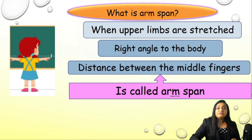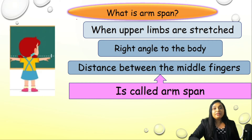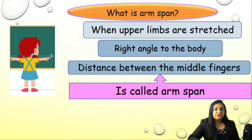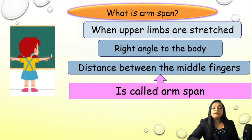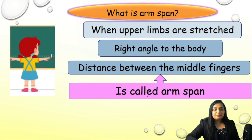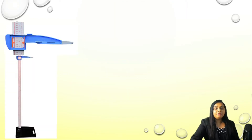The foremost question is: what is arm span? When the upper limbs are stretched — as you can see in this picture, the child is standing facing the wall or a board — the arms are stretched at right angles to the body, and we take the distance between the two middle fingers. The child should be standing still, and this measurement is taken from behind the child. It is called arm span.